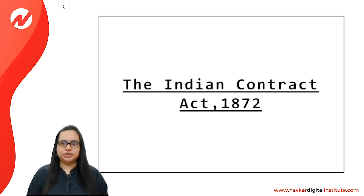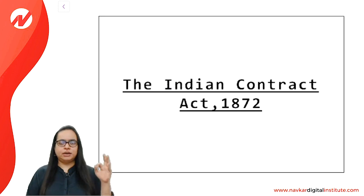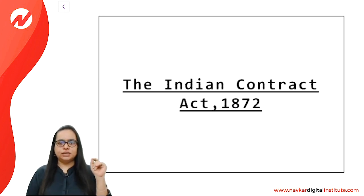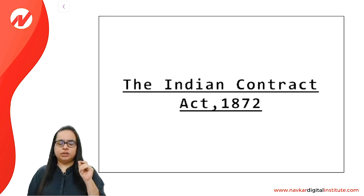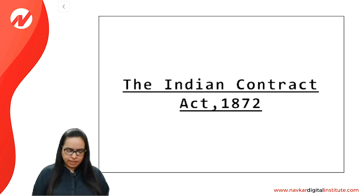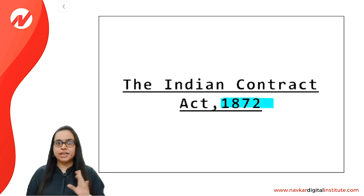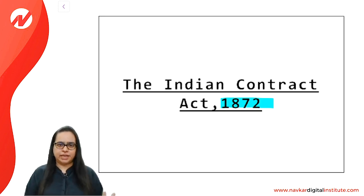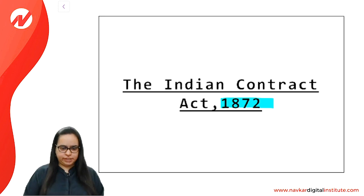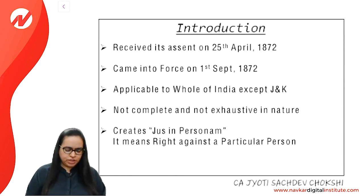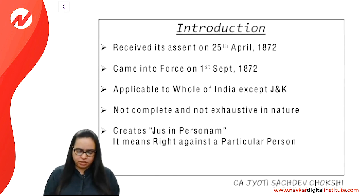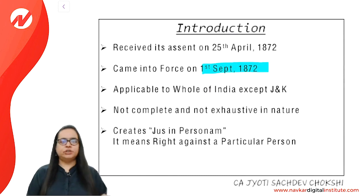We are starting with the Indian Contract Act 1872. First of all, we should always remember the year of the Act, which we should always mention in the answer. The Indian Contract Act is 1872 — whether it is partnership, sale of goods, or companies act. Remember the date: 1st September 1872.